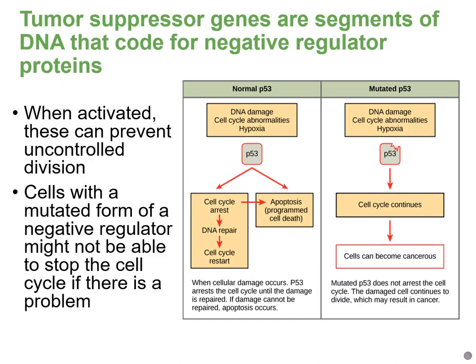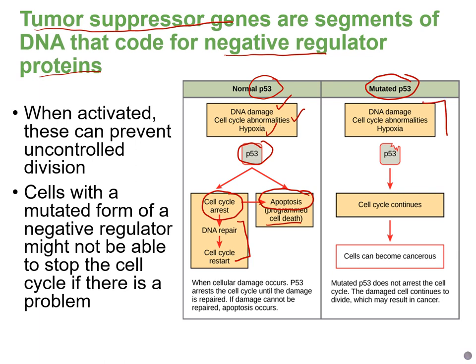The opposite of proto-oncogenes are tumor suppressor genes, which encode negative regulator proteins like RB, p53, and p21. Normally, p53 prevents cell cycle progression when DNA is damaged or oxygen is insufficient, allowing time for repair. If repair is not possible, p53 triggers apoptosis — programmed cell death, also called cell suicide. But if p53 is mutated, the cell cycle continues even when it shouldn't, allowing abnormal cells to replicate.